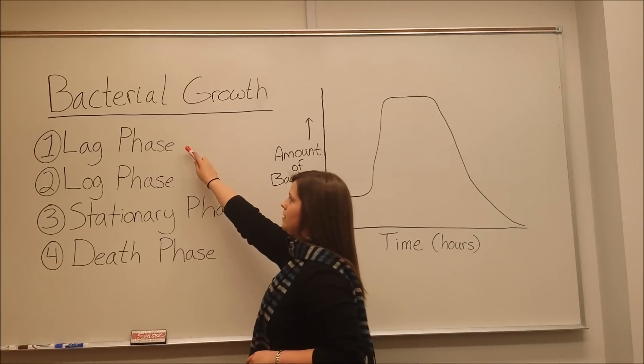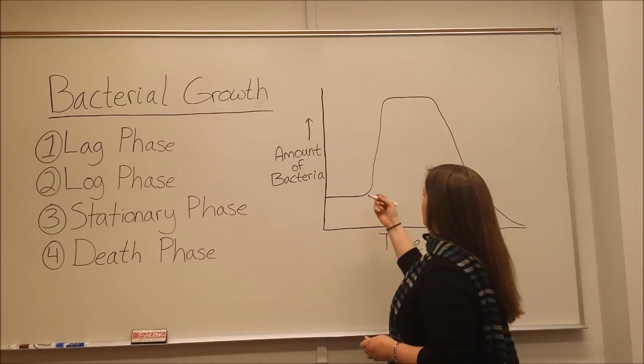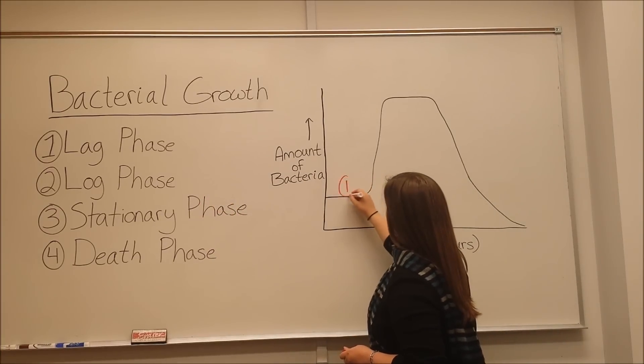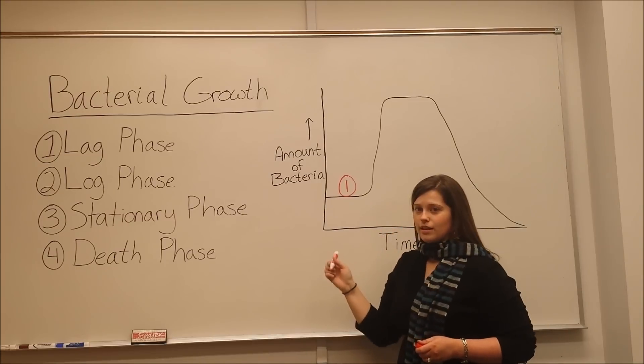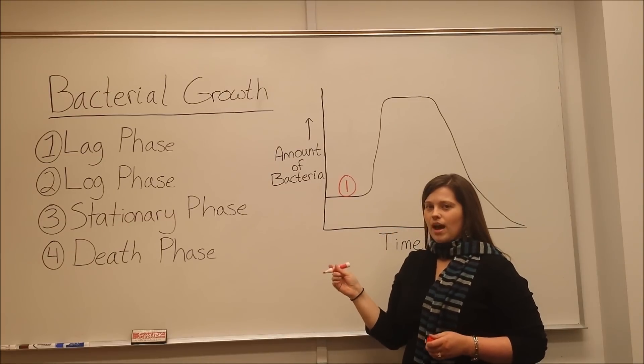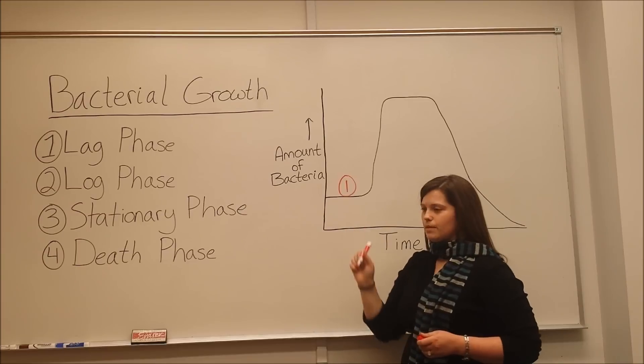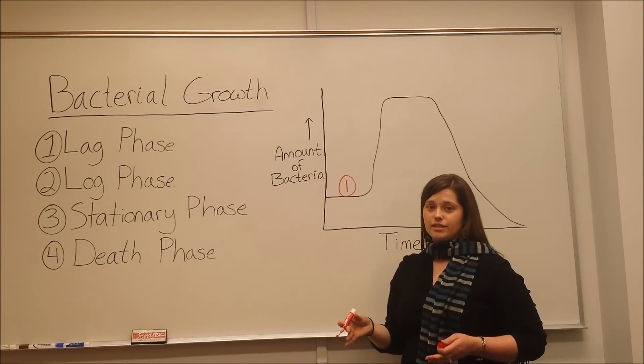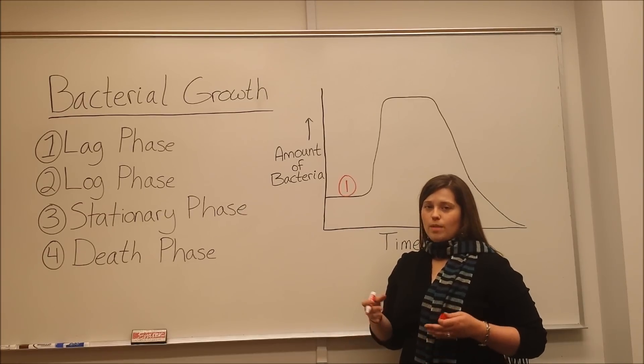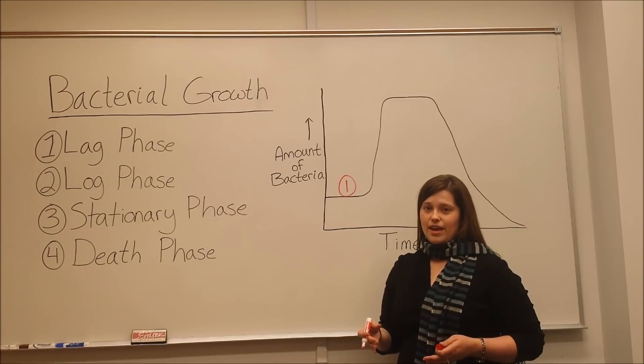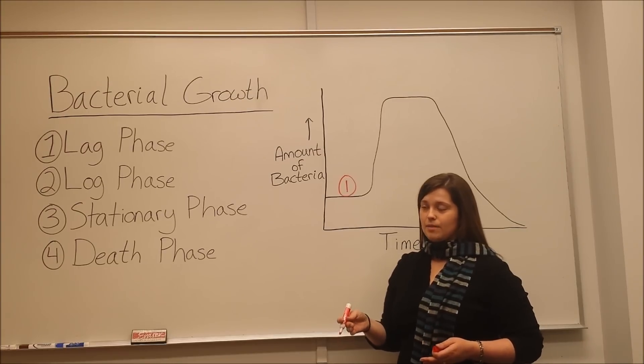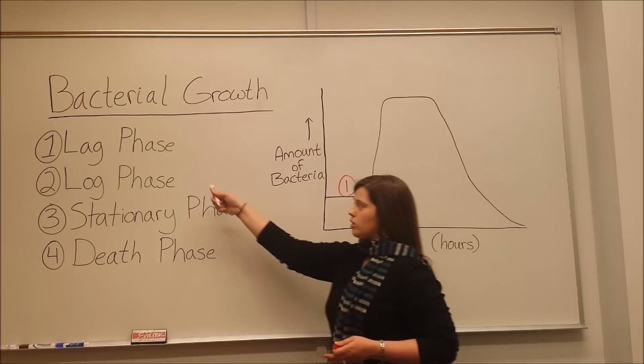The first one, lag phase, if we look at over here, is during the early part of growth when you have inoculated the culture. There's no active cell division because the bacteria are preparing to divide. So they are replicating their DNA, they are making necessary enzymes to move into log phase, which we'll draw here.